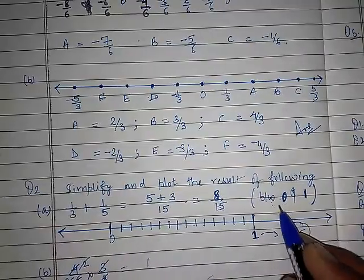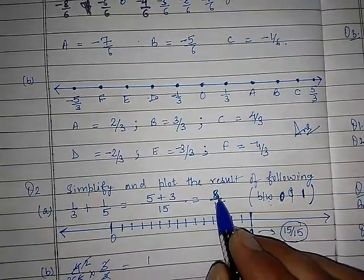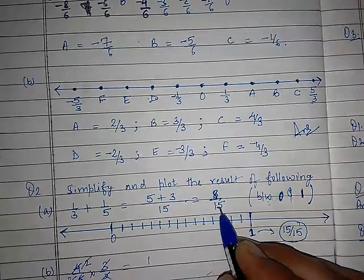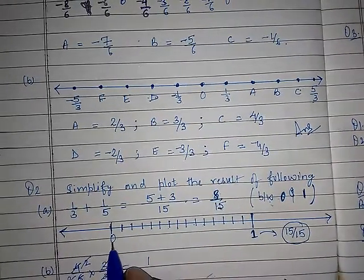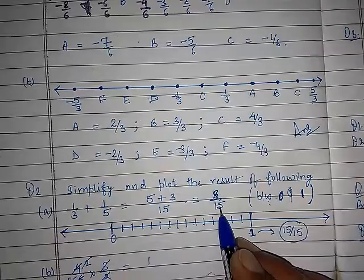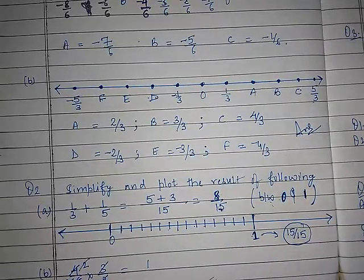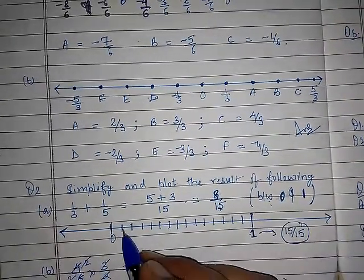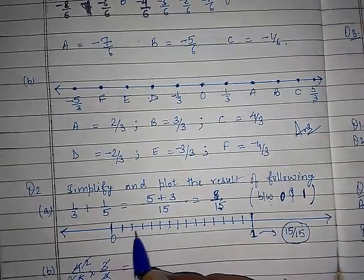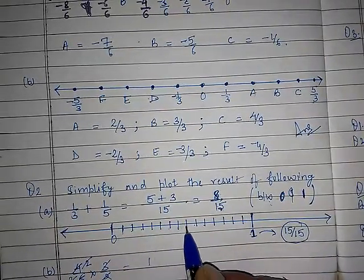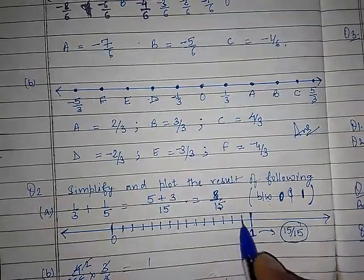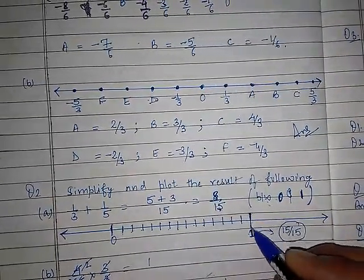This is the method to check your answer. The denominator shows that you have to divide 0 and 1 into 15 parts. For 15 parts you will mark 14 lines. So this is 0, then 1 upon 15, 2 upon 15, 3 upon 15, 4 upon 15, 5 upon 15, 6 upon 15, 7 upon 15. This is 8 upon 15.